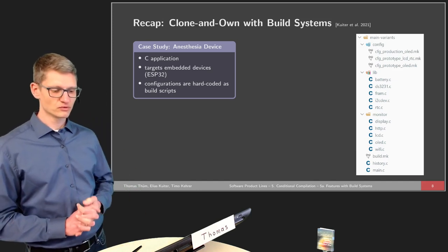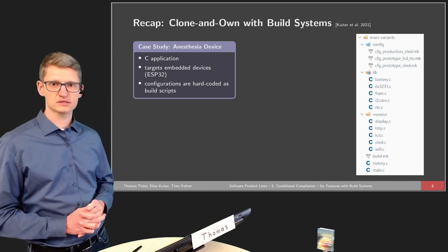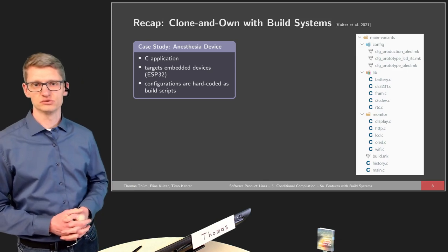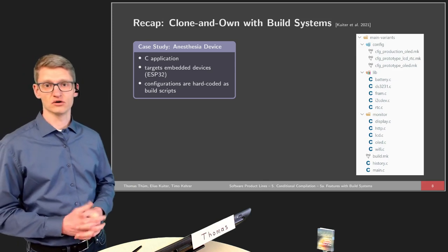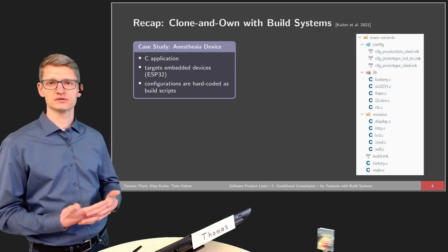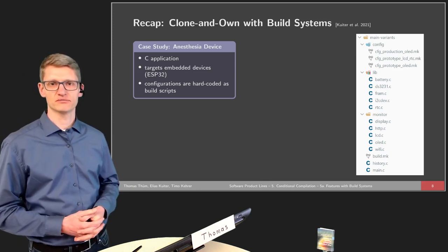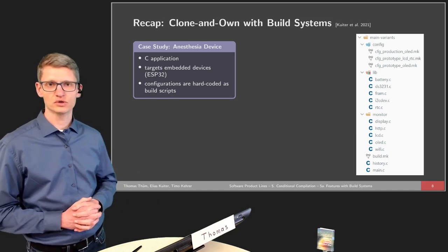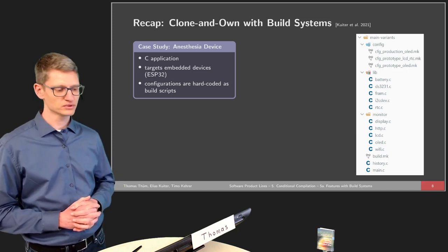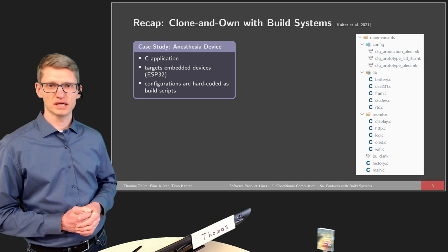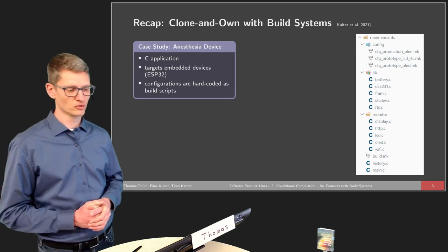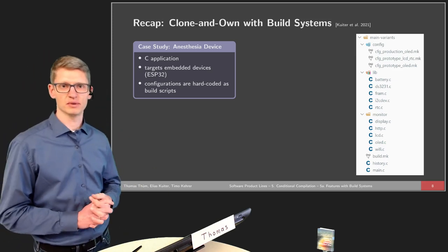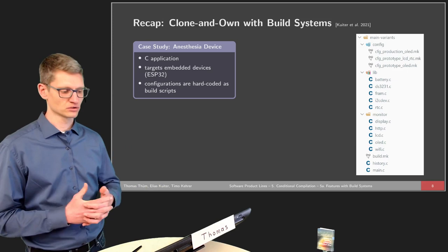To recap, we want to see how build systems can be used to realize our vision of a product line — features and compile-time variability. We will have a short look at one example, and you can refer to the paper for more details, which happens to be a paper by Elias Küter.